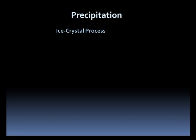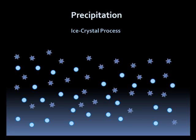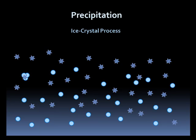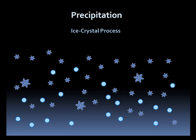In the ice crystal process, both super-cooled cloud droplets and ice crystals exist together. Water from the cloud drops is attracted to the ice crystals, depositing water vapor on the ice crystals and increasing their size. They become too heavy after a while, falling and colliding with other ice crystals and cloud drops to form even larger ice crystals. These ice crystals will reach the ground as snow, rain, or another precipitation type, depending on how warm it is at the bottom of the cloud and below it.